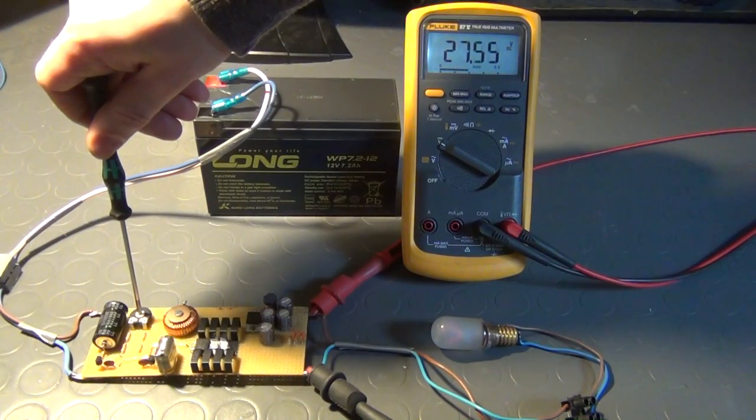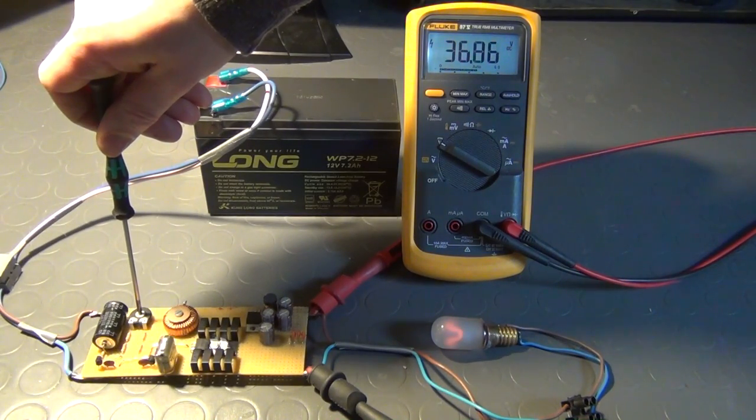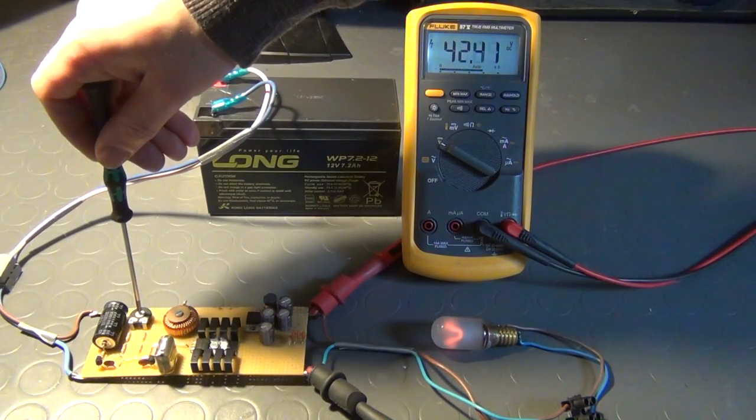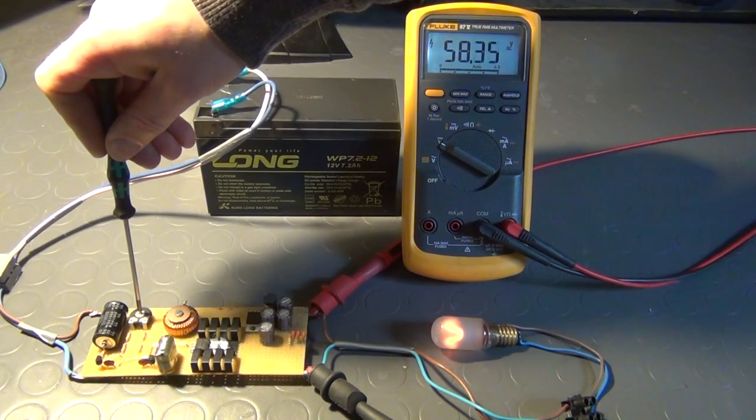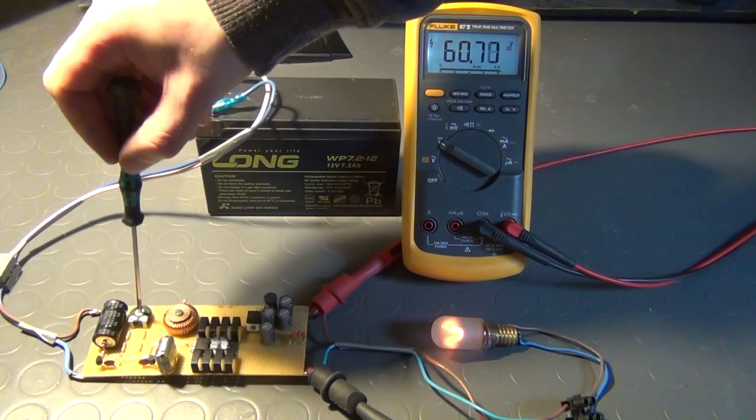By turning the trim pot on the board, I can adjust the duty cycle of the boost converter and step up the output voltage. As you can see on the DMM, the voltage at the output of the converter is now many times bigger than the actual source voltage.